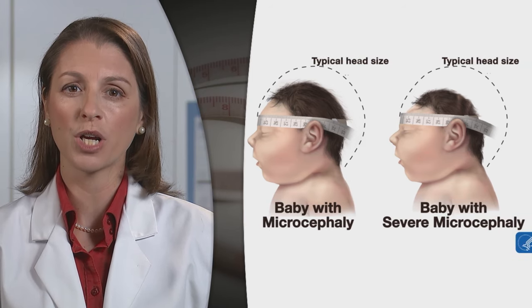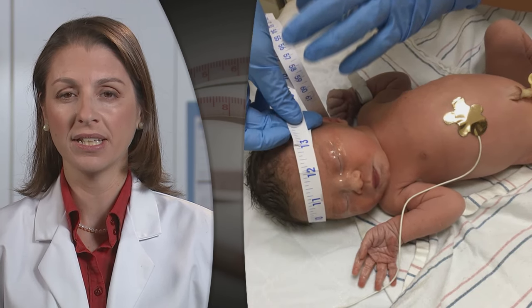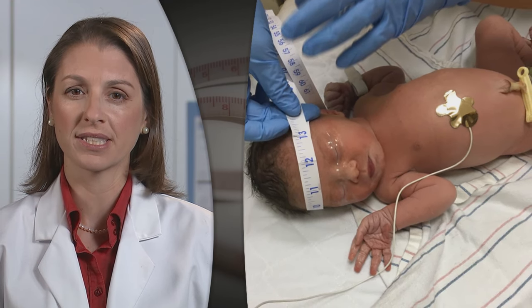Head circumference is considered a reliable assessment of the volume of the underlying brain. To assess an infant for microcephaly, a clinician measures the newborn's head circumference. It is important that healthcare providers measure head circumference in the same way, consistently, to accurately identify if an infant has microcephaly. This is especially important in the midst of the Zika outbreak because correctly identifying infants who may have Zika-associated microcephaly can help health authorities connect them to the services they need.